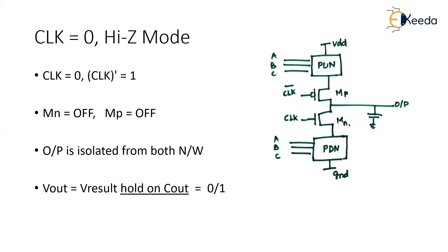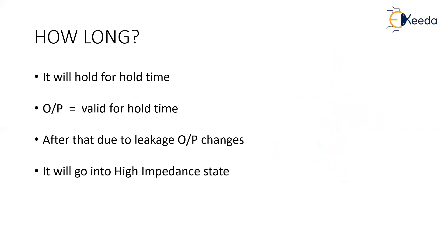Since the output is isolated from both networks because MP and MN are OFF, what value will be present at the output? The output will be holding a result voltage. The capacitor would have stored some voltage during the previous phase — that is, during the logic evaluation phase. That held-on voltage will be your result voltage and will appear at your output. If the capacitor stored 0, output will be 0; if it stored VDD, output will be VDD. But how long will this capacitor store the voltage?